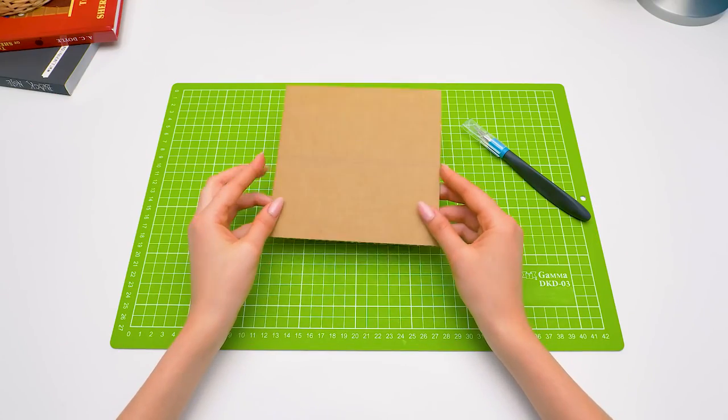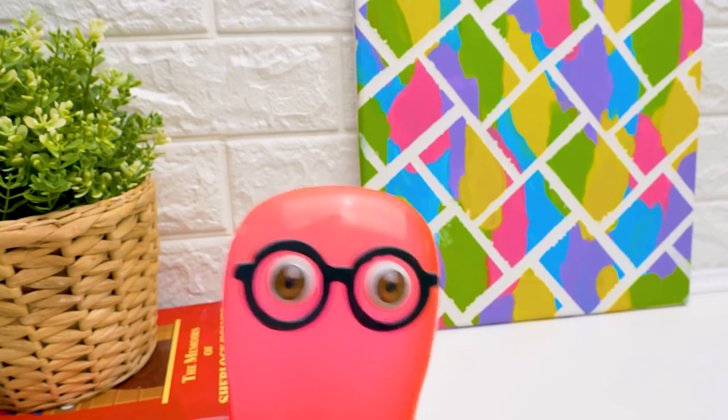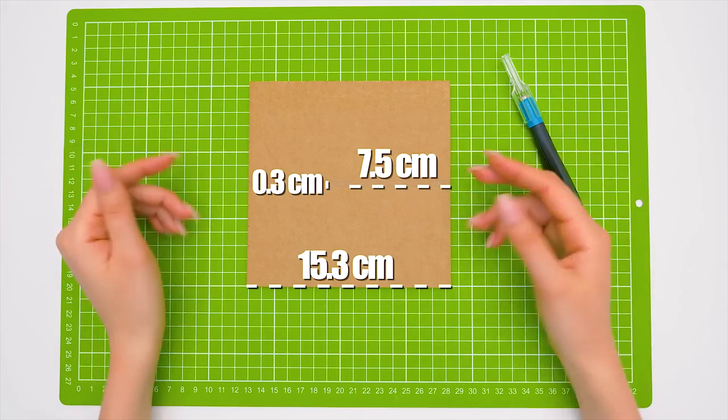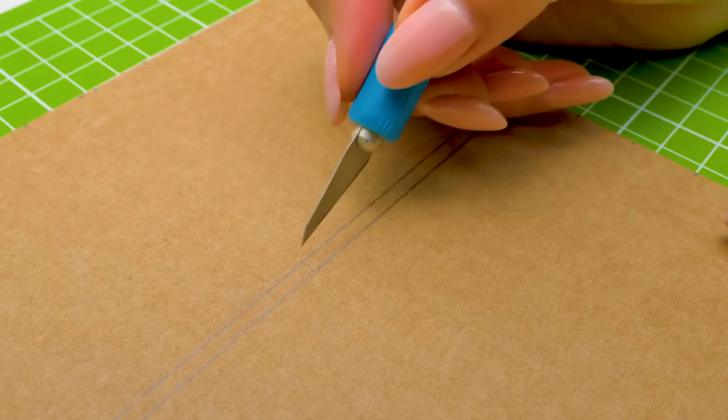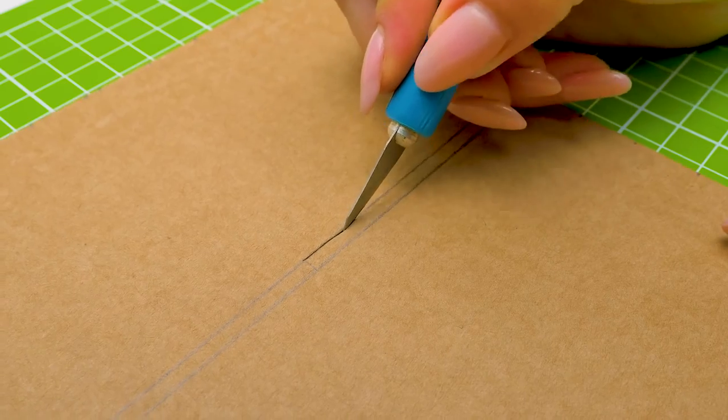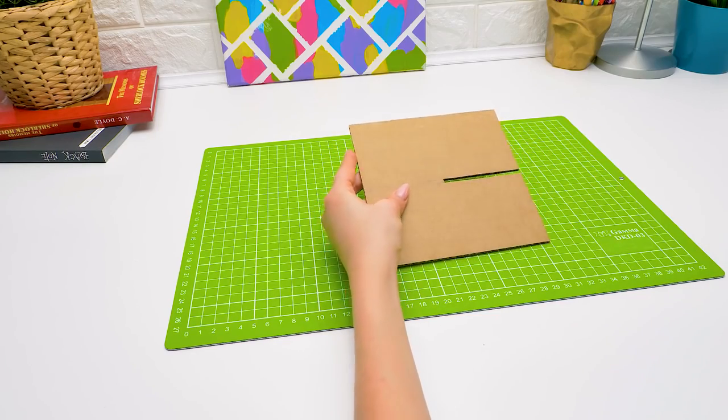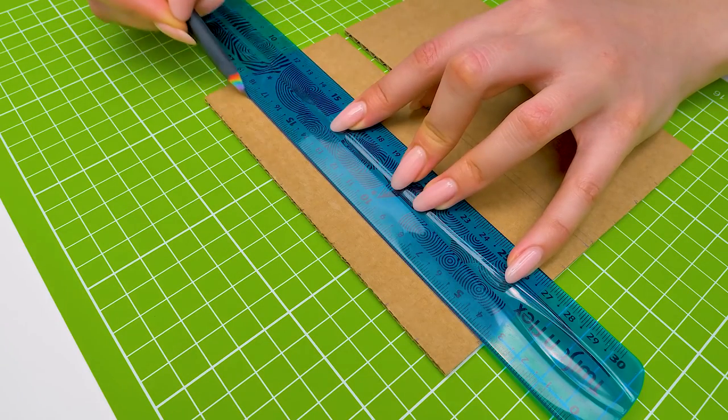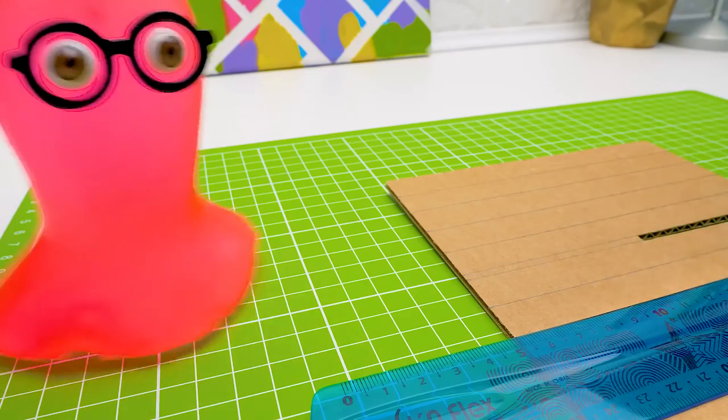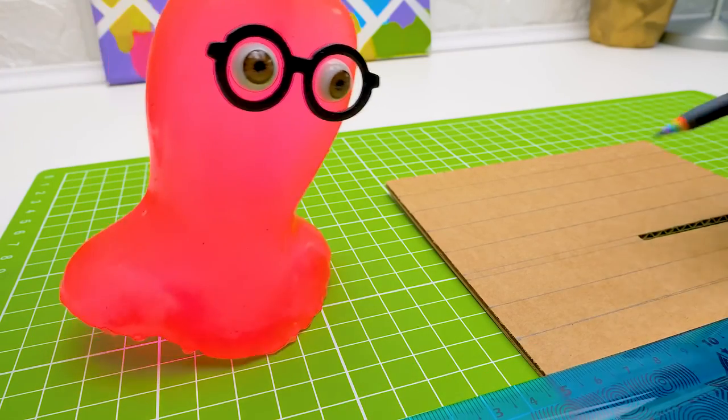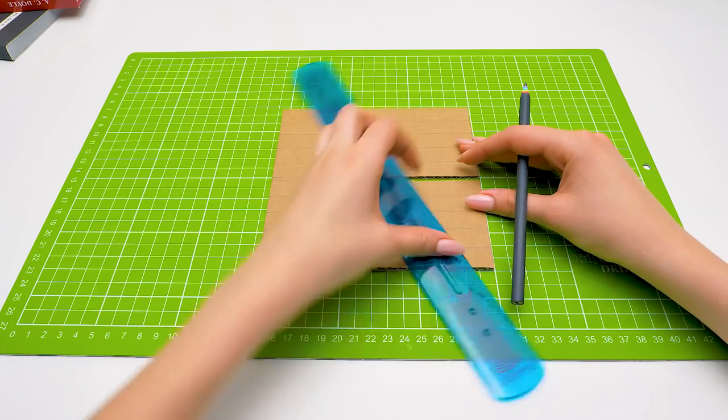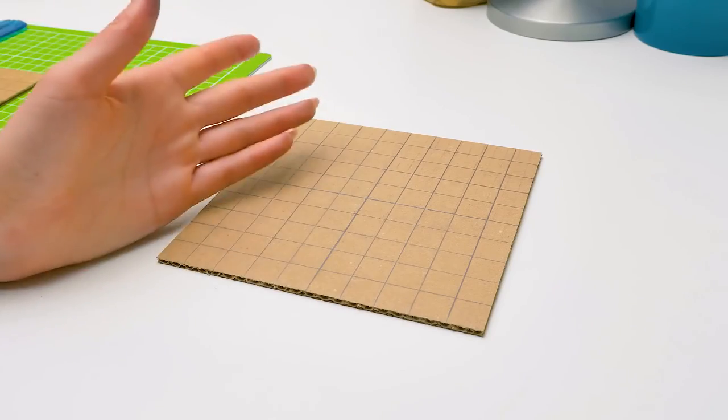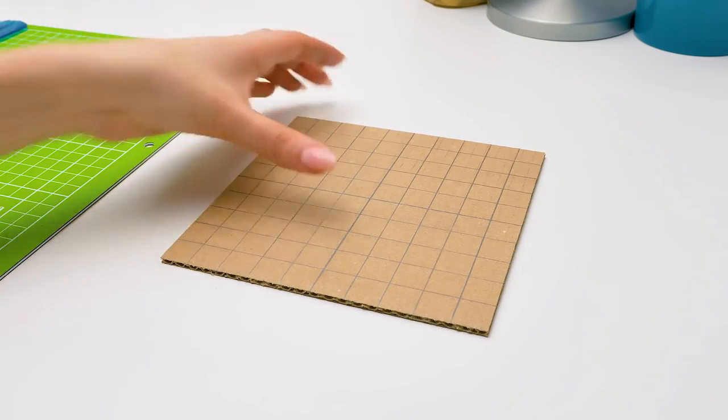We need a cardboard square like this to start. Are you going to draw a labyrinth? But you promised it would be 3D! No, Sam, this will be the base, and we'll need two pieces like this. Guys, be careful dealing with the cutter. You'd better ask an adult to help you.